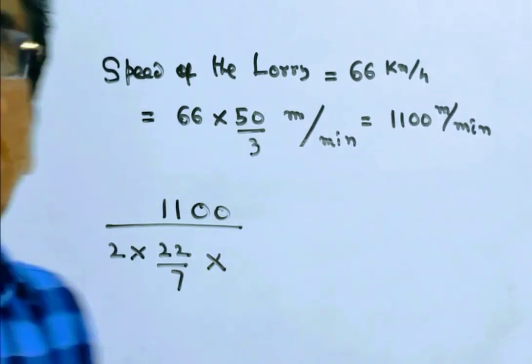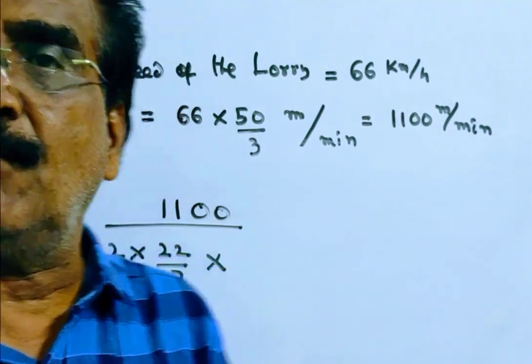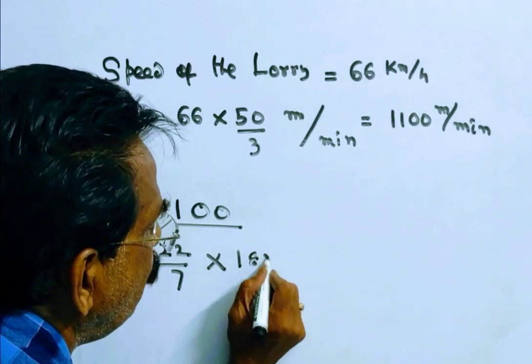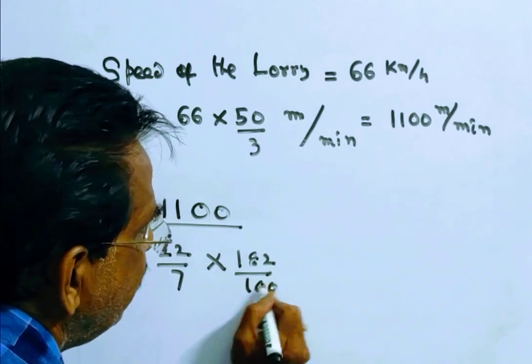r is equal to 182 centimeters, that is equal to 182 by 100 meters.